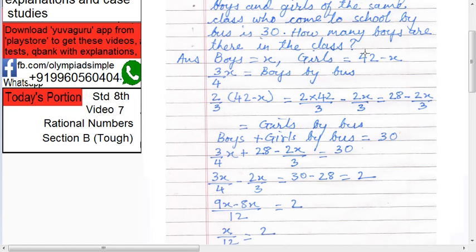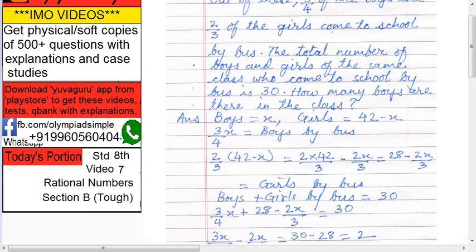And what about girls? Two-thirds of the girls by bus. So 2 upon 3 into girls is 42 minus x. So solve this: 2 into 42 upon 3 minus 2 into x upon 3. This multiplied for both the elements. So you get 28 minus 2x by 3.